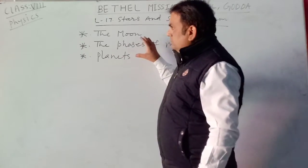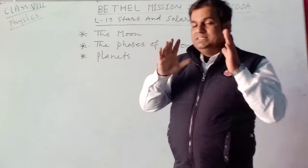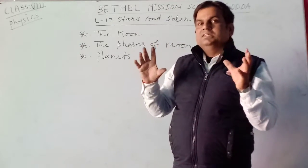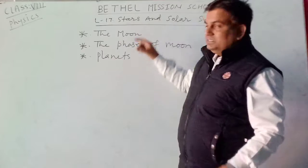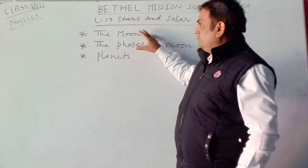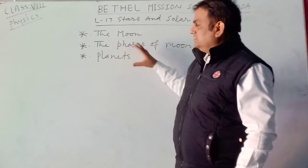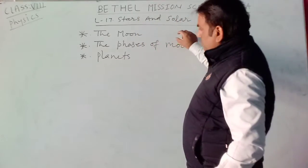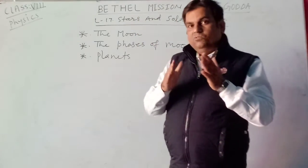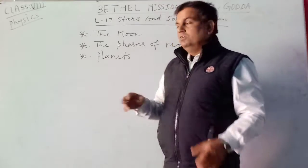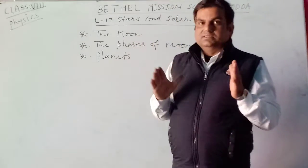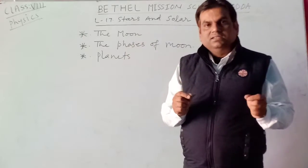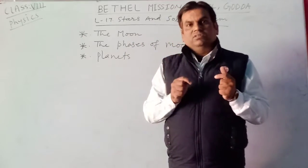The size of the moon is one fourth of the earth — whatever the size of the earth, the moon is one fourth of that size. The mass of the moon is one eighth of the mass of the earth. When we compare the moon and earth: size is one fourth and mass is one eighth.